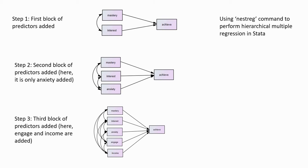As you can see on your screen, we have three different multiple regression models that are represented. The first model involves adding two predictors in a block — mastery goals and interest — to predict student achievement. If we run our regression analysis, we would be looking at the R-square value and testing it for statistical significance. R-square is just the proportion of variation accounted for in the dependent variable as a function of our predictors in the model.